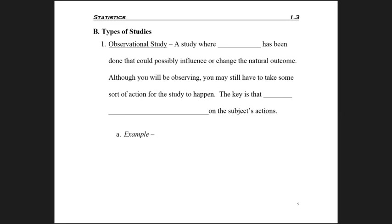When it comes to obtaining your data, there are times where you need to set up a study, and there are two types of studies. The first type is called an observational study, where nothing has been done that could possibly influence or change the natural outcome. Although you'll be observing and may have to take some action for the observation to take place, the key is that you have no influence on the subjects' actions.